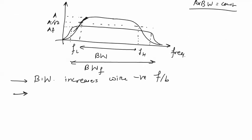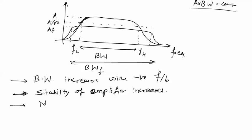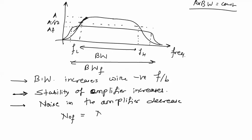Number three: the greatest advantage of negative feedback is that the stability of the circuit — or stability of the amplifier — increases. With the application of negative feedback, we can increase the stability of the amplifier. Number four: noise in the amplifier decreases. With feedback, the noise is Nof, and without feedback the noise is No; it is reduced by the factor 1/(1 + A·beta).